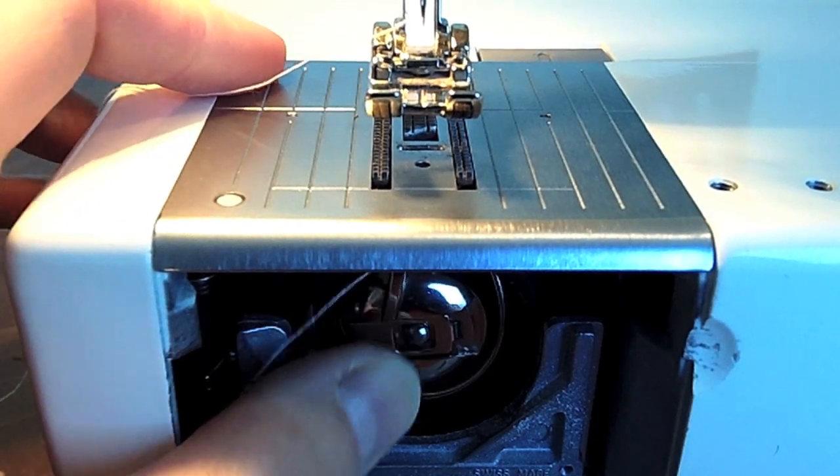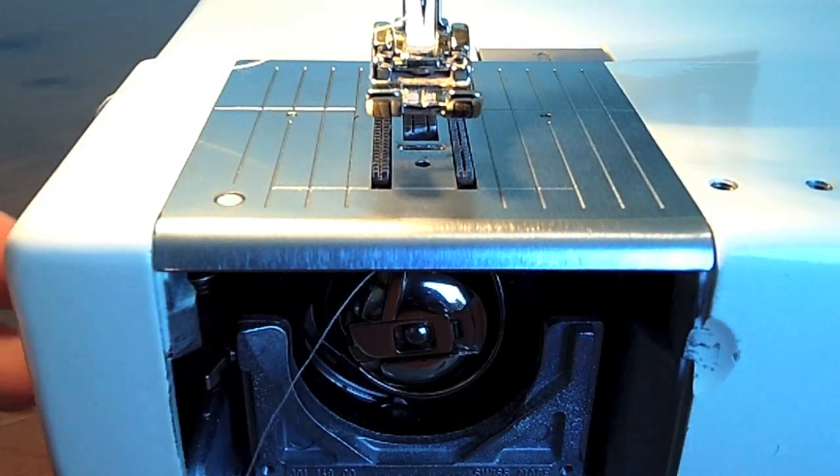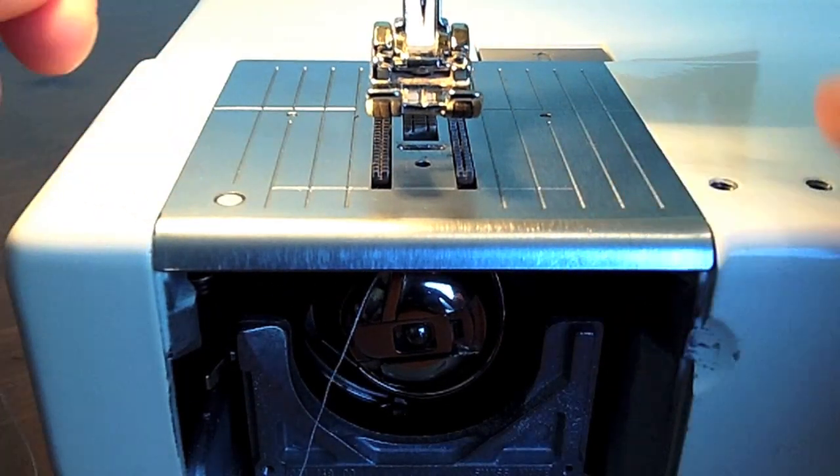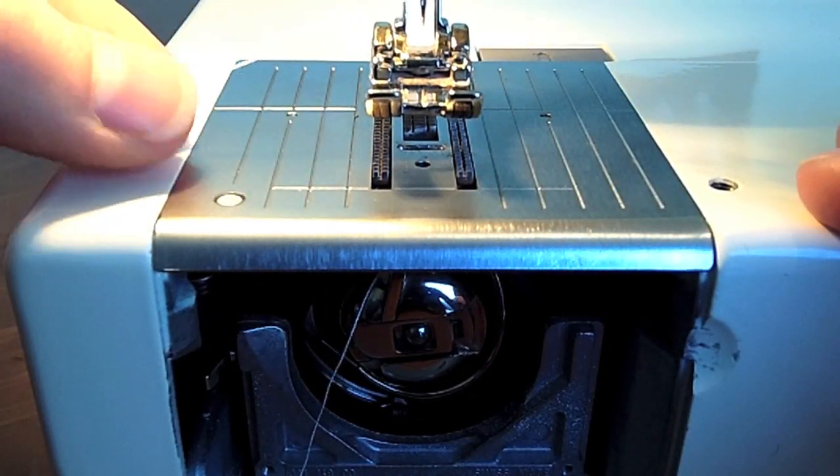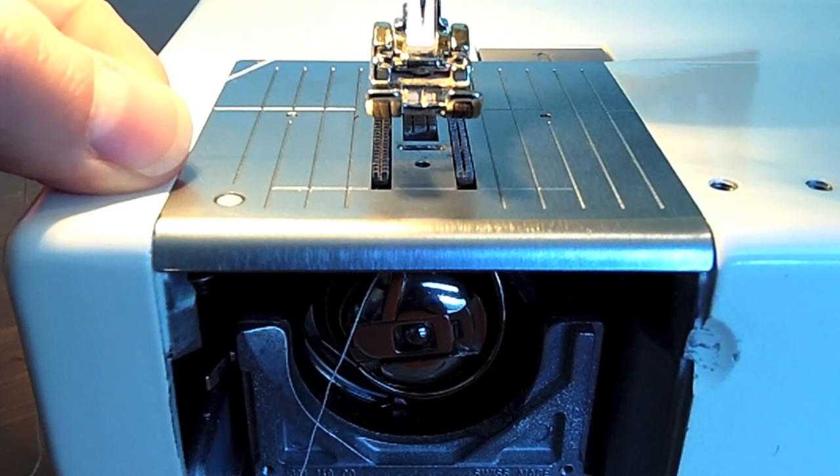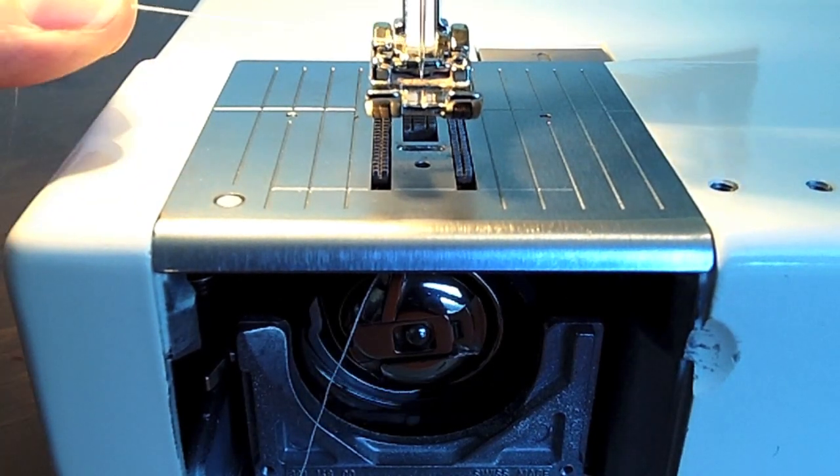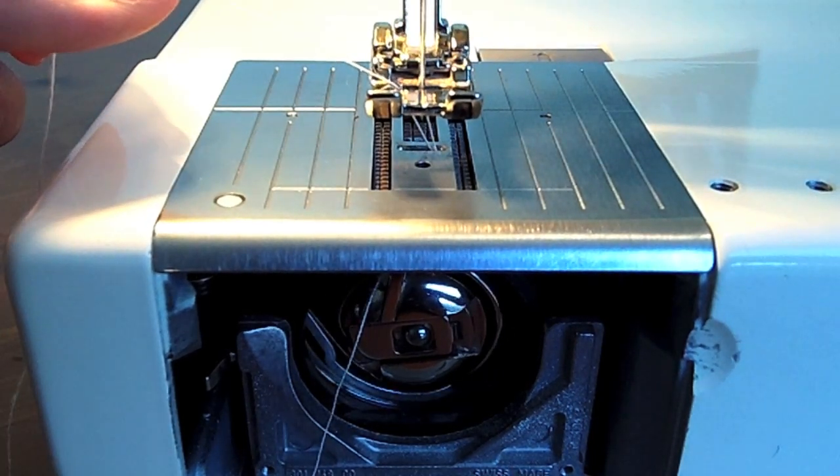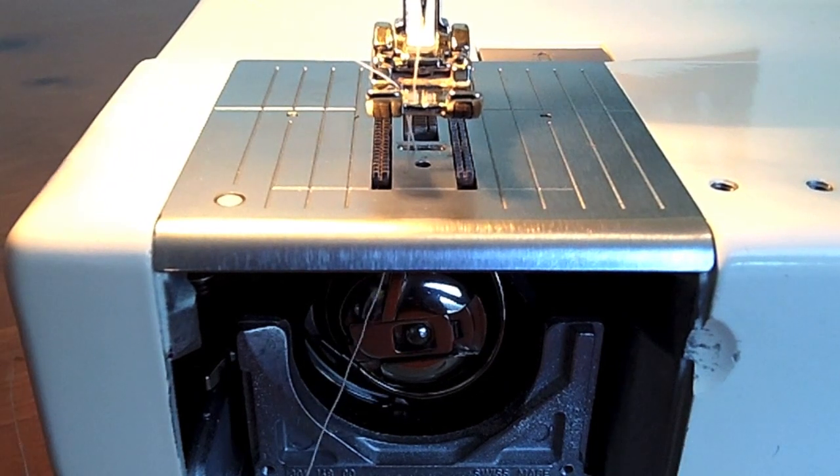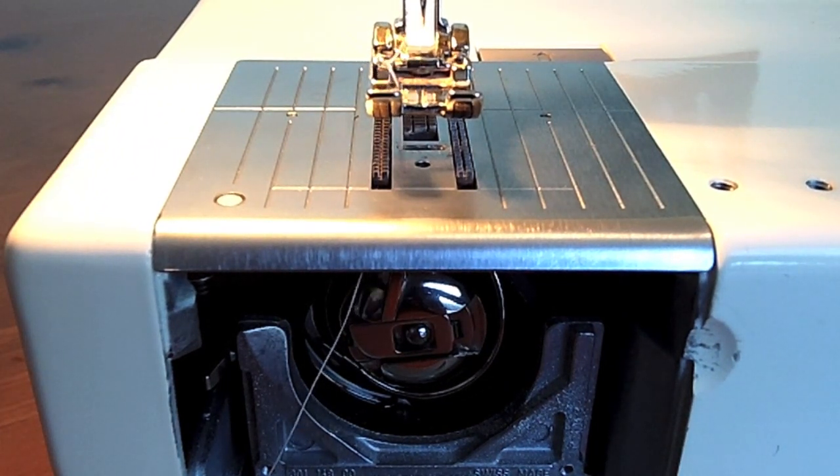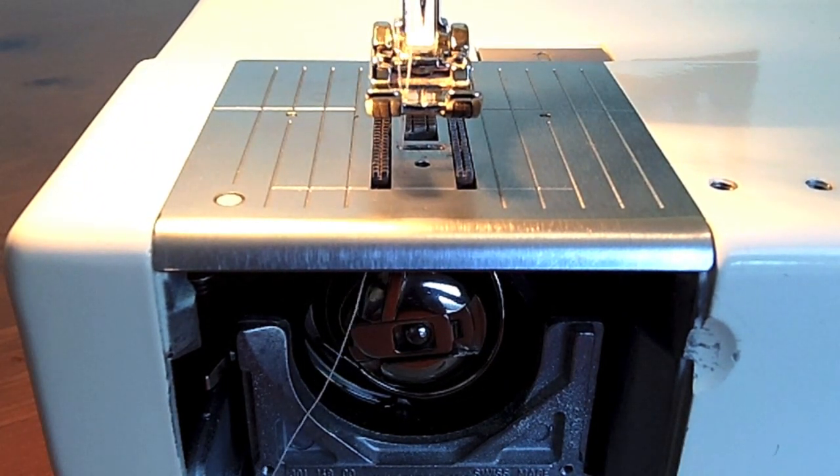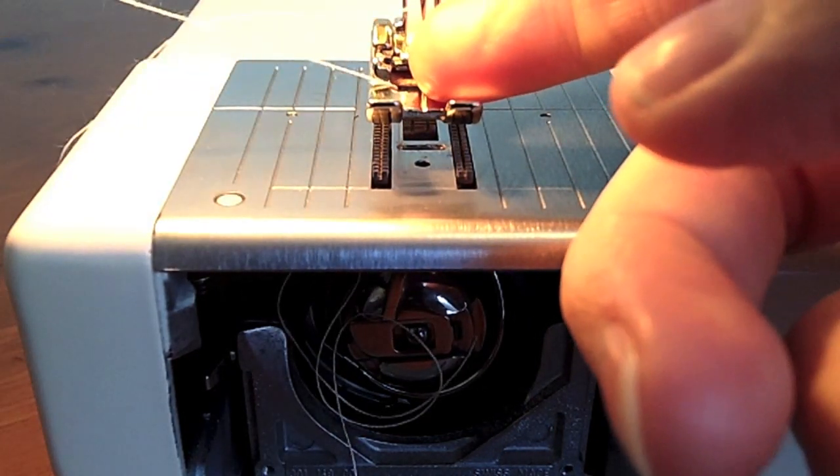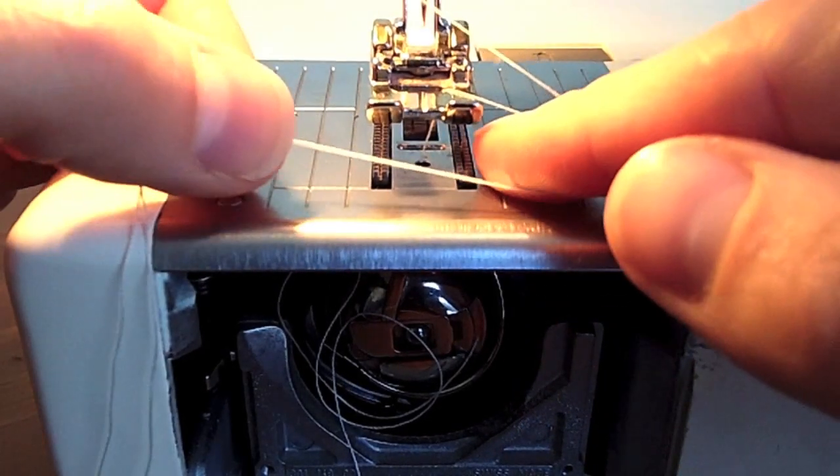Now to get the thread up through the machine, you need to use your hand wheel. I'm going to hold that top thread and turn the hand wheel towards me. You should see the thread go over the bobbin case there. Once the needle is back up, you can pull that top thread and it'll bring the bobbin thread back up with it. Just pull that thread out.